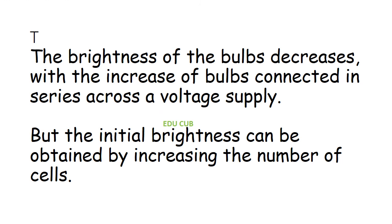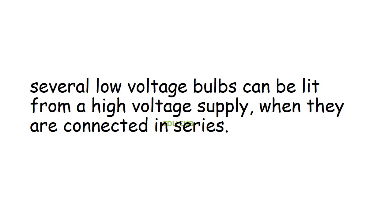Switch on all three circuits at the same time and observe the brightness of the bulbs. In this activity you can see the brightness of the bulb decreases with the increase of bulbs connected in series across the voltage supply. But the initial brightness can be obtained by increasing the number of cells. Several low-voltage bulbs can be lit from a high-voltage supply when they are connected in series.